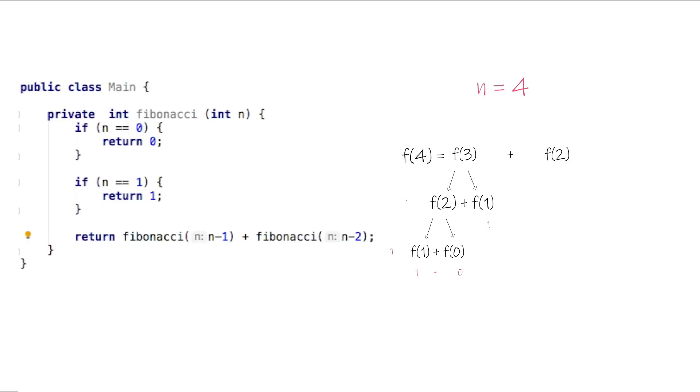Then Fibonacci 1 here will also return 1. Now Fibonacci 3 is already calculated. It is the sum of 1 from this side and 1 from this side. Total is 2. Now the program will start calculating Fibonacci 2 here, which is Fibonacci of 1 plus Fibonacci 0. Fibonacci of 1 equals 1, Fibonacci of 0 is 0, total here is 1.